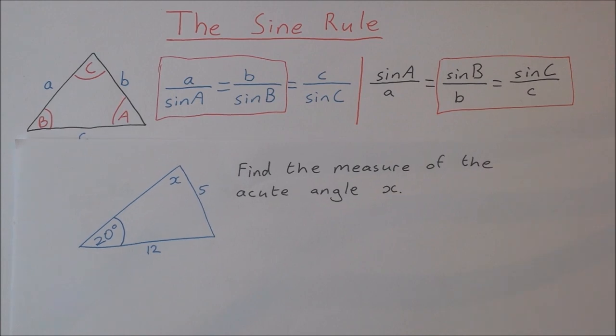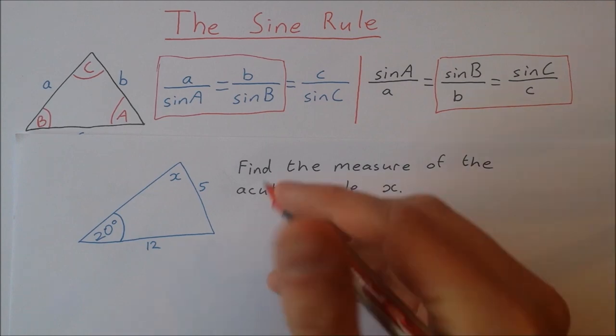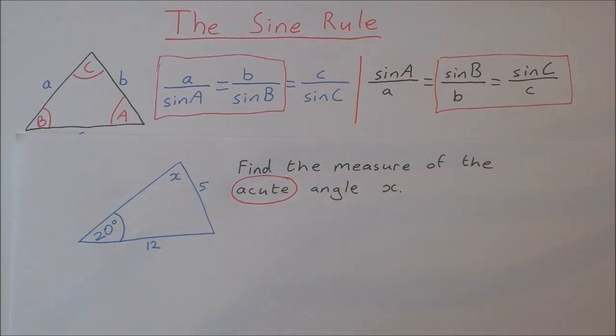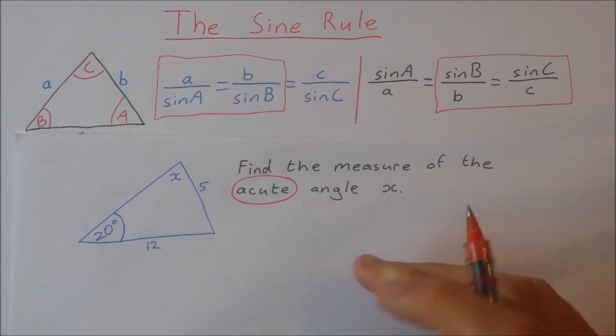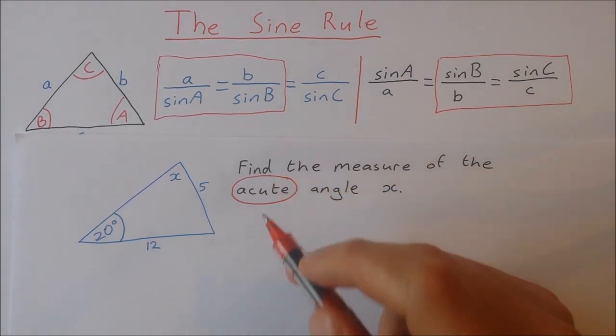Okay in the second example we're asked to find the measure of the acute angle x. Now this is important that it's the acute angle x because when we use the sine rule you can often get two answers for the same question. So that's called the ambiguous case and if you click this link here that'll bring you to a video showing you the ambiguous case. This case is not ambiguous because we're asked for the acute angle.